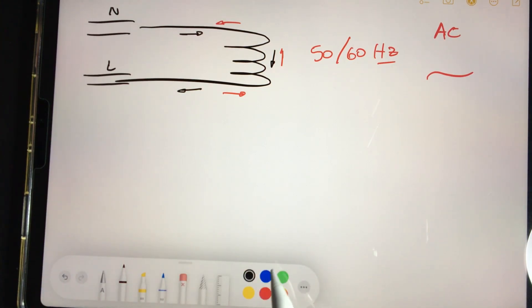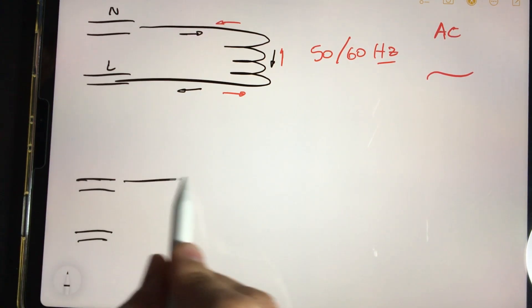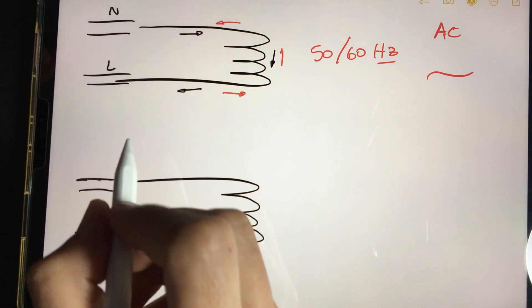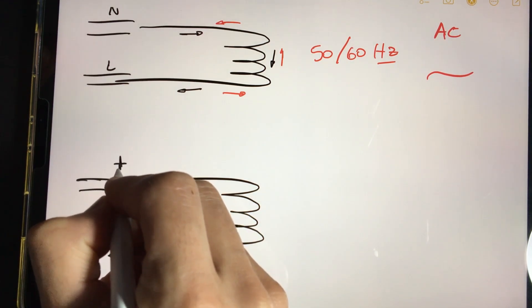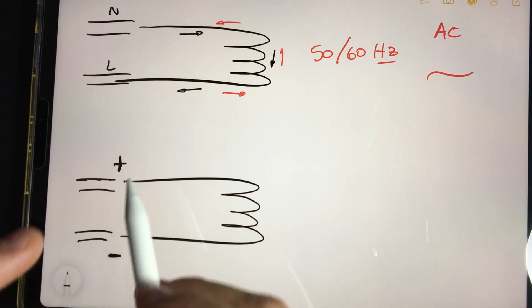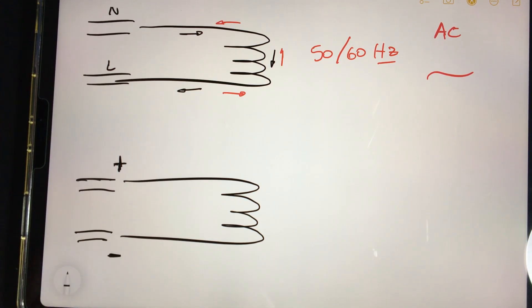Now, if we want to draw the direct current, as I told you, it is much easier. In this case, we have a negative pole and a positive pole. Where do the electrons come in? I always ask the same question in live classes. Many times many answer that it is positive. But no, electrons are the negative charge of an atom and enter through the negative pole.